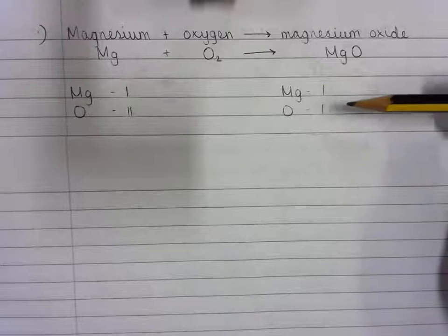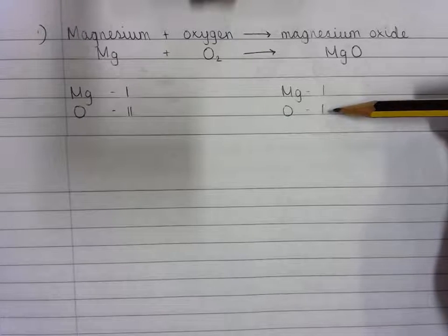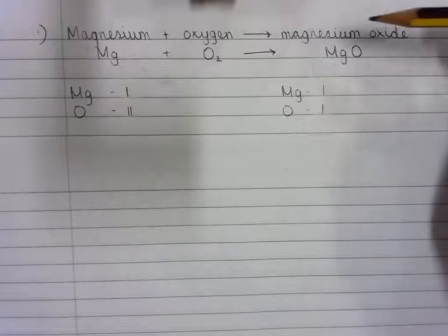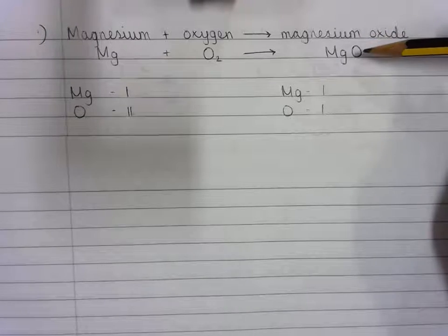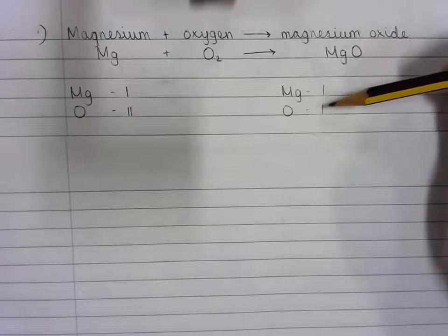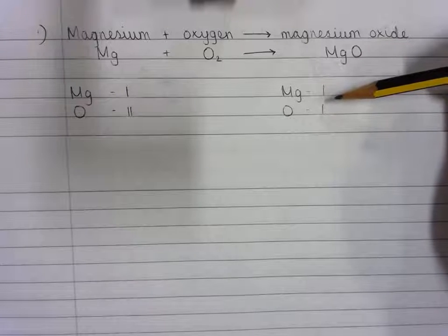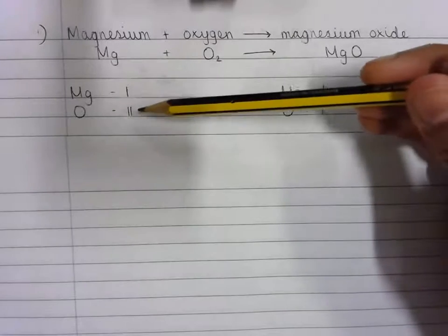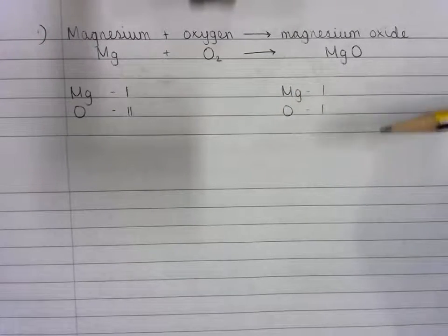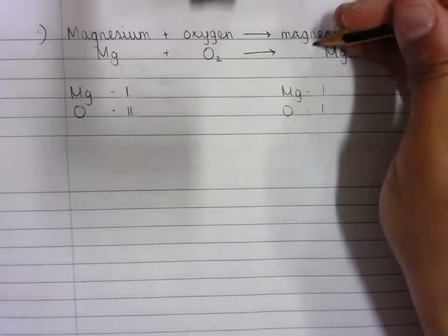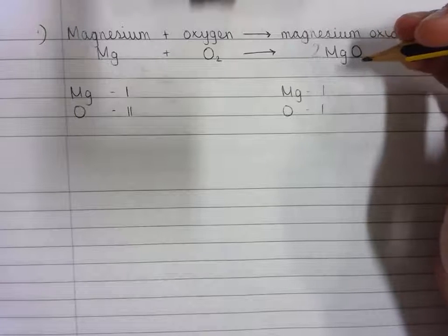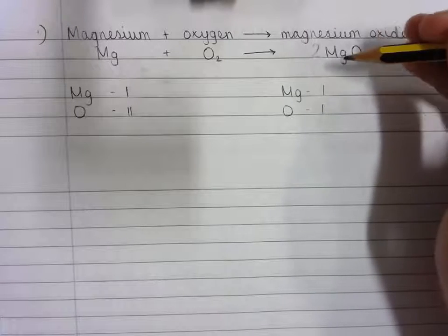The answer is no, because there is one fewer oxygen atom on the product side. To change that, you need to add a number in front of the magnesium oxide because it contains the oxygen atoms that need to increase in number. We need to increase the number of oxygen atoms to two because there are two oxygen atoms on the reactant side. So put a two in front of the magnesium oxide in pencil now, and re-tally — always remember to re-tally.